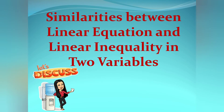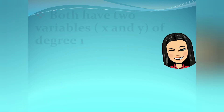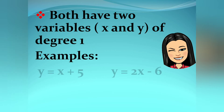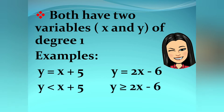Now let's look at the similarities between linear equations and linear inequalities in two variables. Both have two variables x and y of degree 1. For examples: y equals x plus 5, y equals 2x minus 6, y is less than x plus 5, and y is greater than or equal to 2x minus 6.